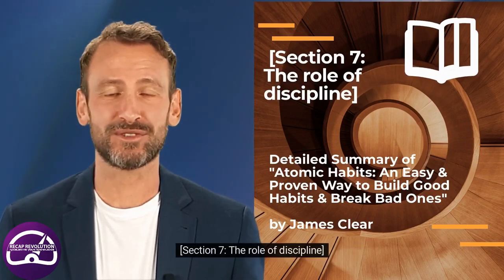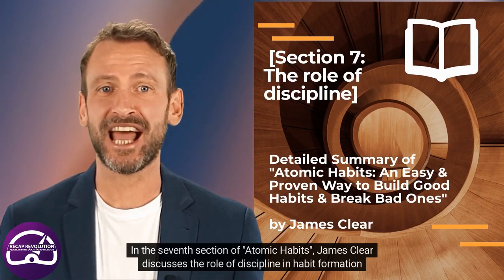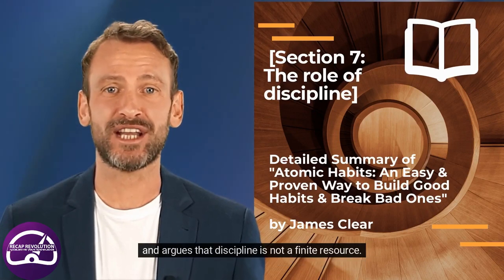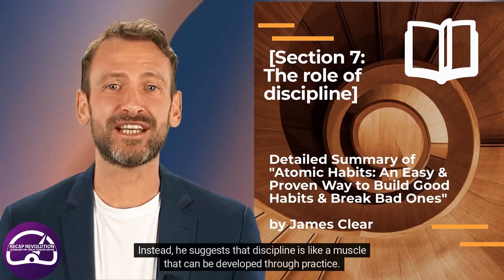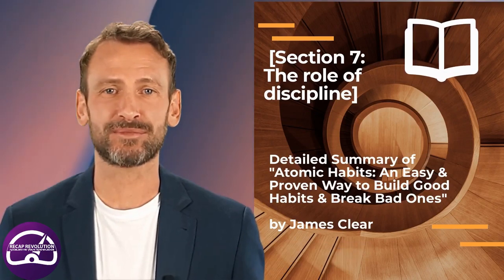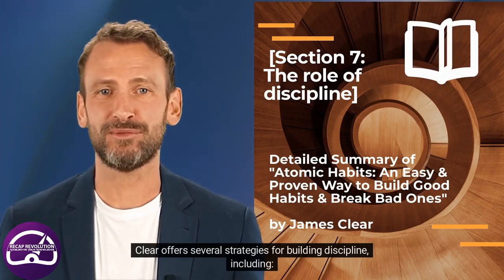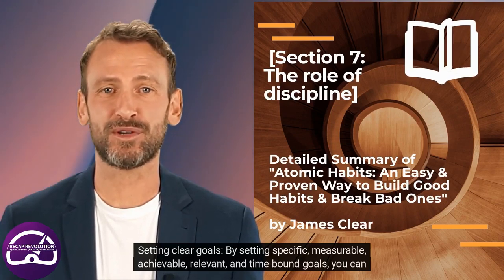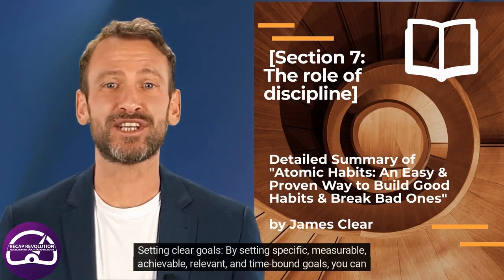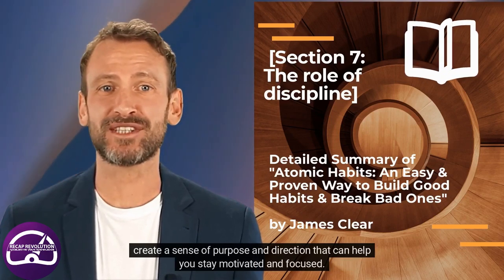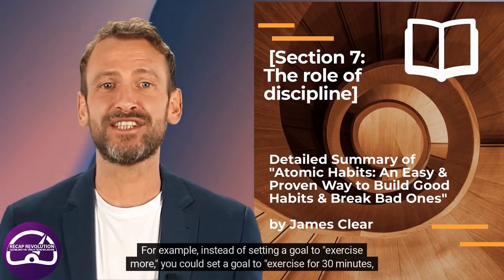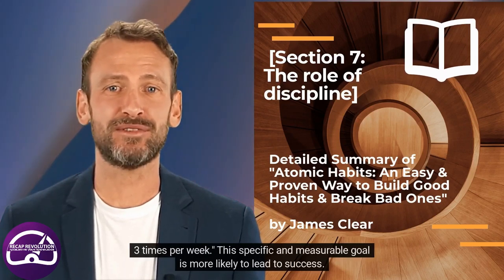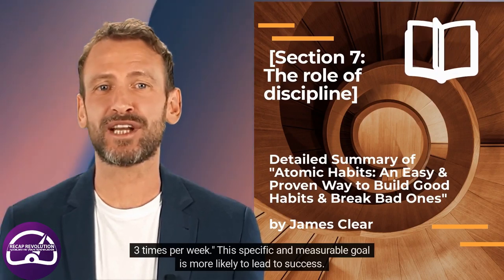In the seventh section of Atomic Habits, James Clear discusses the role of discipline in habit formation and argues that discipline is not a finite resource. Instead, he suggests that discipline is like a muscle that can be developed through practice. Clear offers several strategies for building discipline, including setting clear goals. By setting specific, measurable, achievable, relevant, and time-bound goals, you can create a sense of purpose and direction that can help you stay motivated and focused. For example, instead of setting a goal to exercise more, you could set a goal to exercise for 30 minutes, three times per week — a specific and measurable goal that is more likely to lead to success.